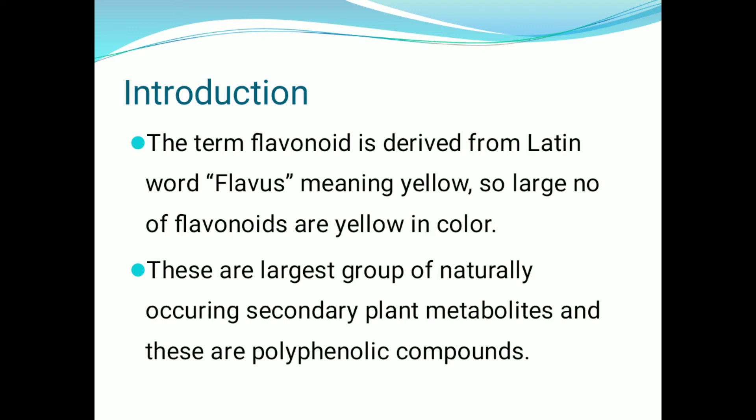Secondary metabolites are organic compounds synthesized by plants and fungi. These are not an essential part of the metabolic pathway, but are side products. Examples of secondary metabolites include pigments like anthocyanin, alkaloids like morphine, terpenoids, toxins, antibiotics, drugs like vinblastine, and polymeric substances like rubber and gums.